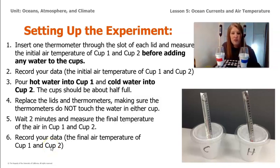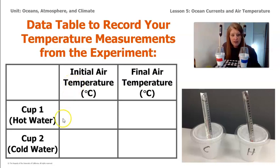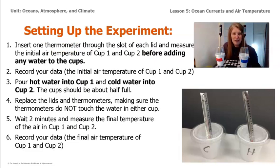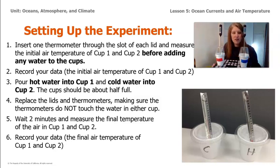We'll record that using a data table — a data table like the one shown in this picture would be great, or you could just record it in your notes. We want to know what the initial air temperature is and also the final air temperature of both the cup with the hot water and the cup with the cold water. Once we have placed the hot and cold water in each of the cups, we will set our timer. I have a timer here for two minutes, and then we're going to record the temperature of the air after two minutes has gone by.